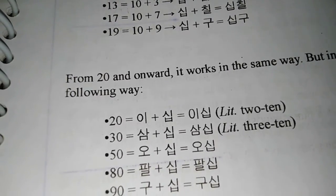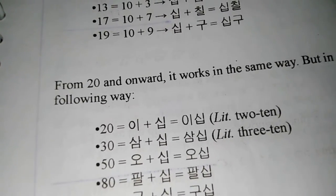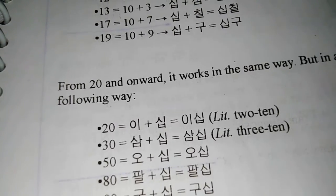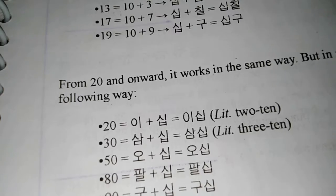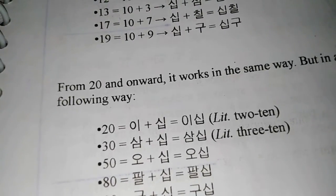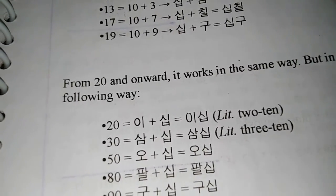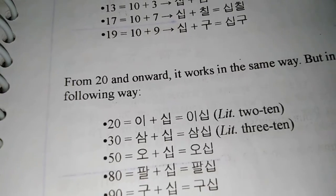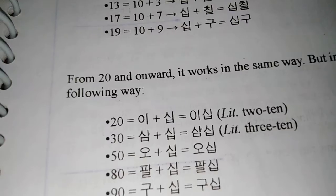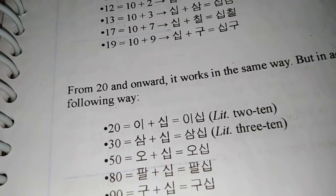If you want to say numbers like twenty-one, same as before—you would have two plus ten to say the twenty part of it, and then for twenty-one we need that one there, so you would just add a one also. So it would become two plus ten plus one. For thirty-one it's sam-shib-il. You can make any number like that.